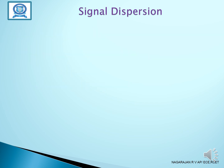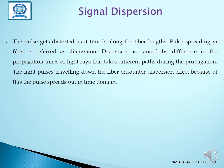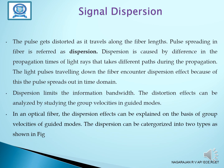Signal dispersion is a pulse broadening that occurs along the fiber lens while spreading in the fiber, referred to as dispersion. Dispersion is caused by differences in the propagation times of light rays that take different paths during propagation. The light pulses traveling down the fiber encounter dispersion effects, and because of this the pulse spreads out in the time domain. Dispersion limits the information bandwidth. The dispersion effect can be analyzed by studying the group velocity in guided modes.